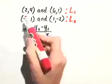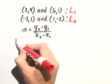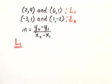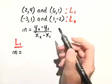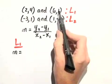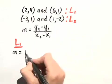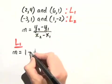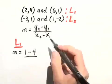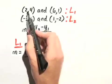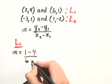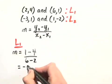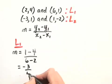We have the first set of points for L1. The slope is going to be the difference of the y coordinates, so y sub 2 which is 1 minus y sub 1 which is 4, divided by x sub 2 minus x sub 1, so we have 6 minus 2. When we simplify, we get negative 3 in the numerator over 4.